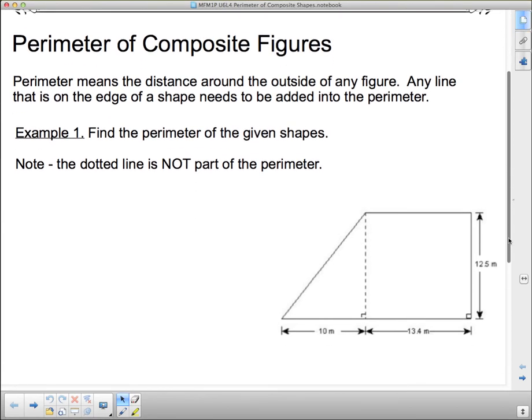I'm going to highlight that. Distance around the outside of any figure. Any line that is on the edge of a shape needs to be added into the perimeter. Now, I want you to note for this first example, there's a dotted line. That dotted line is there to show us how this shape is cut up and to give us some measurements in certain spots.